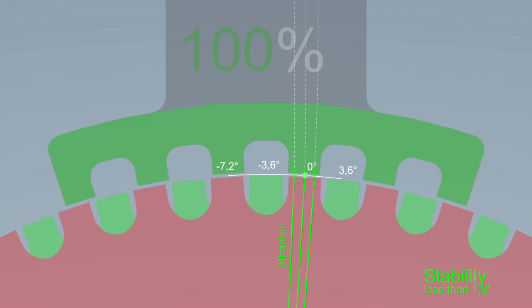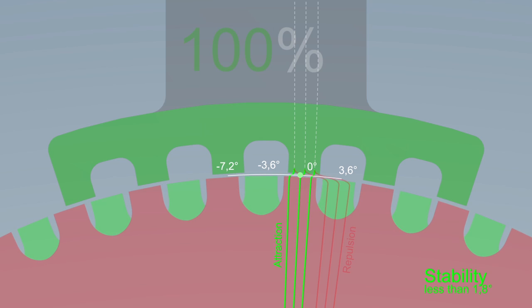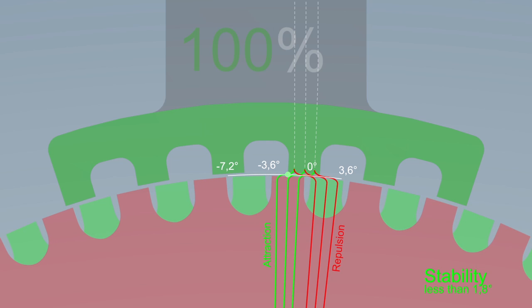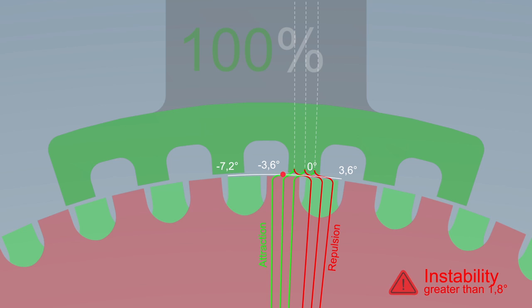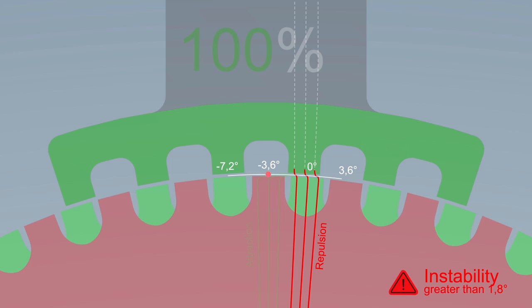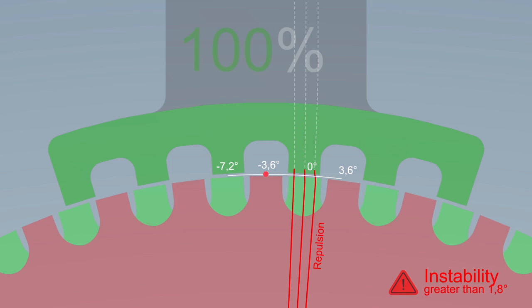If there is a load on the rotor, it turns in relation to the stator. As long as the load angle is mechanically smaller than 1.8 degrees, the rotor remains stable. As soon as the load angle exceeds 1.8 degrees, the rotor becomes unstable because the forces of repulsion are higher than the forces of attraction.